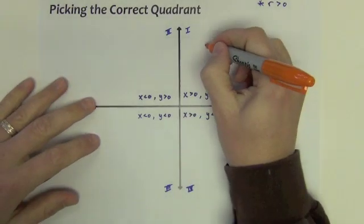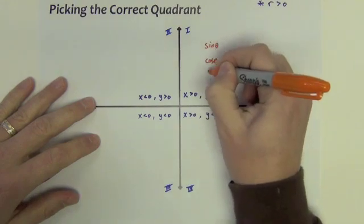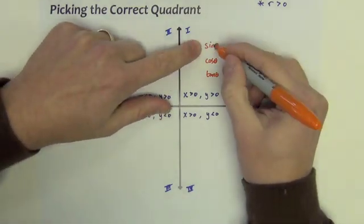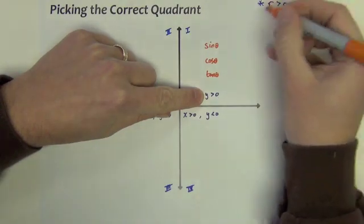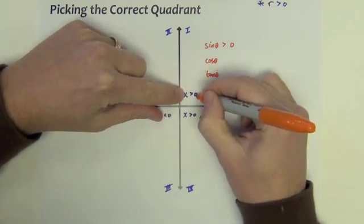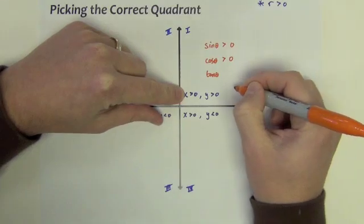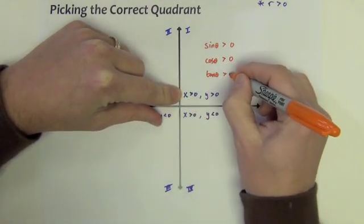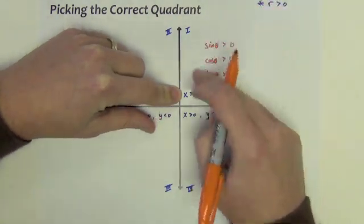So let's begin here. Sine of theta is y divided by r — that's positive divided by a positive, so sine is positive. Cosine is x divided by r — positive over positive — so it's positive. And tangent is y over x — two positives — which is positive.